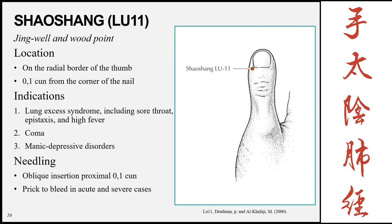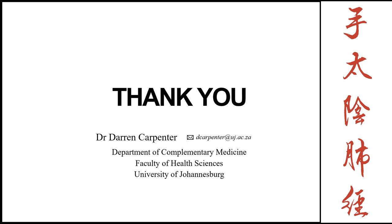The final point of the meridian is Shaoshang, Lung 11, the Jing-well and wood point of the meridian. It is located on the radial border of the thumb, 0.1 Cun from the corner of the nail. Indications include lung excess syndromes such as sore throat, epistaxis, and high fever, as well as coma and manic depressive disorders. Needling is an oblique insertion of approximately 0.1 Cun, or prick to bleed in acute and severe cases. That is the end of the lung meridian. Next we will be looking at the partner meridian of the lung — the large intestine meridian.